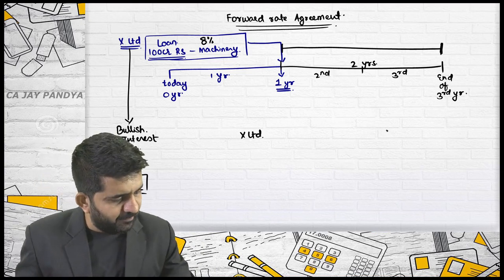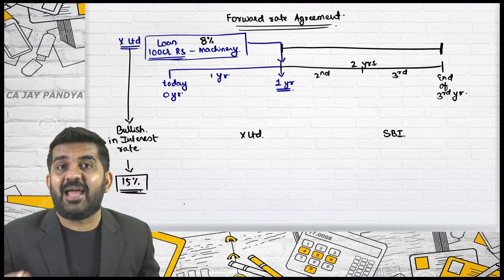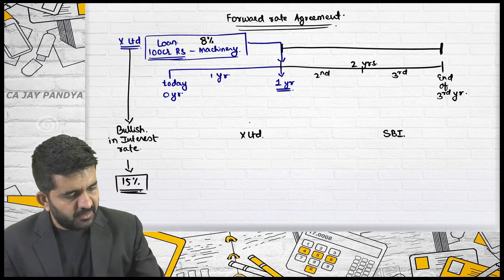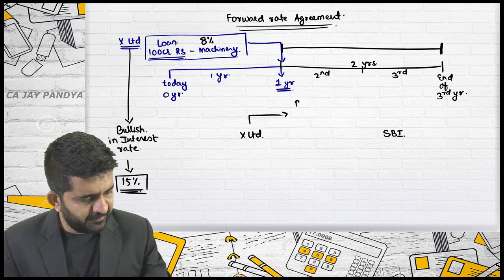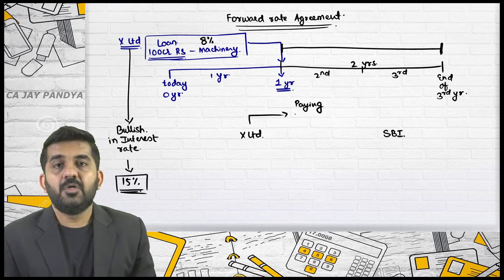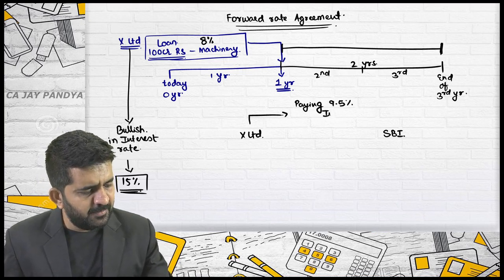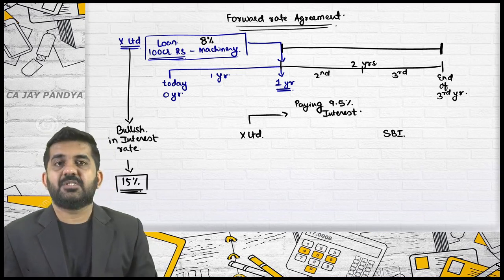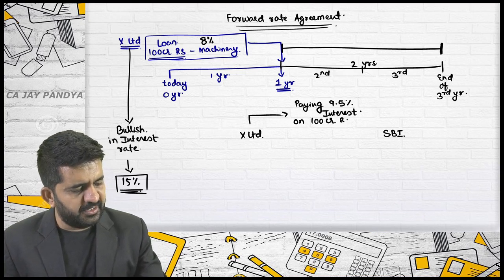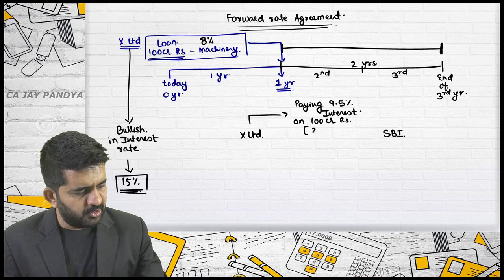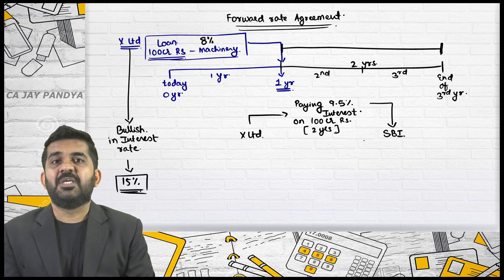X Limited and a bank named SBI enter into an agreement whereby X Limited will be paying 9.5% interest on 100 crore rupees for the period of two years to SBI.